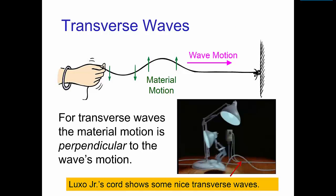Now there are two basic types of waves. The first type is a transverse wave. In a transverse wave, you have the motion of the material being perpendicular to the motion of the wave.